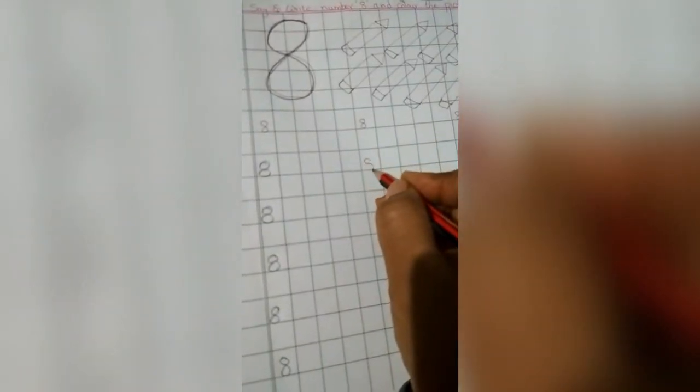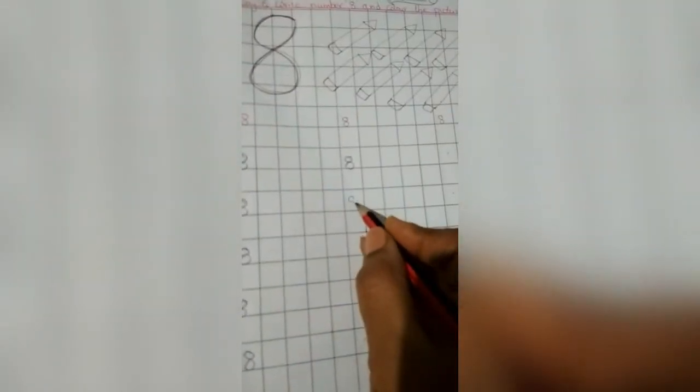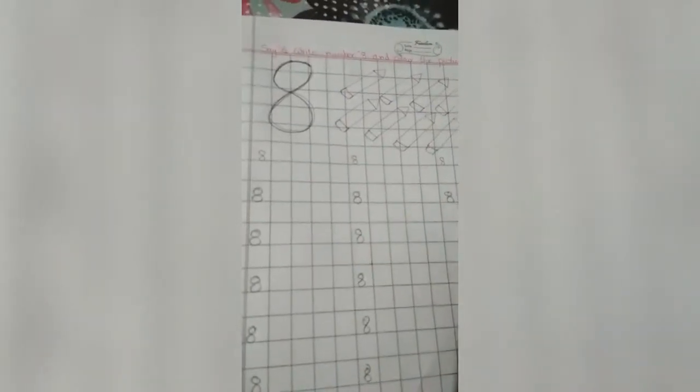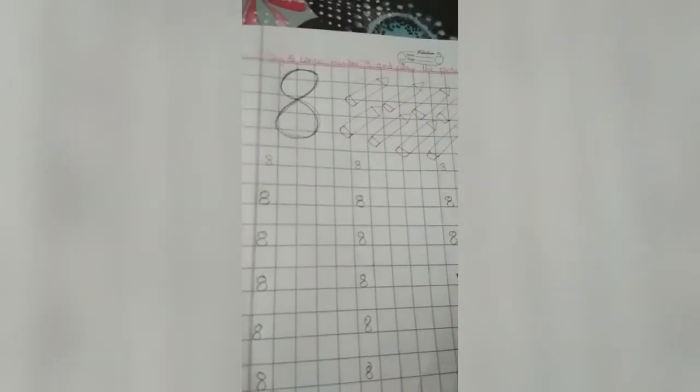Left open curve, right open curve, again left open curve and right open curve. Number eight. This is number eight.